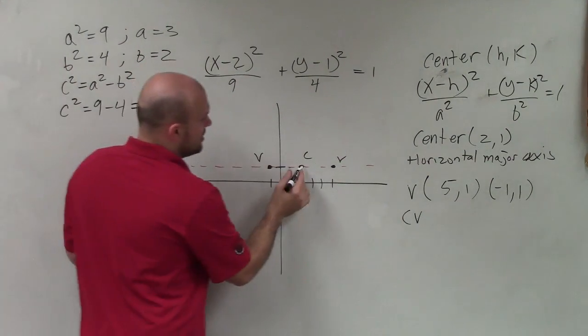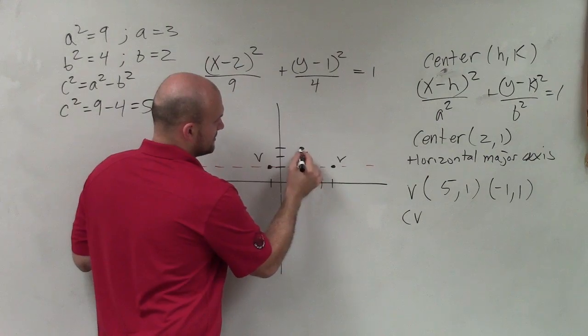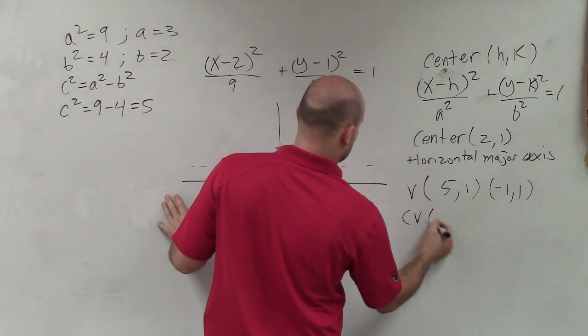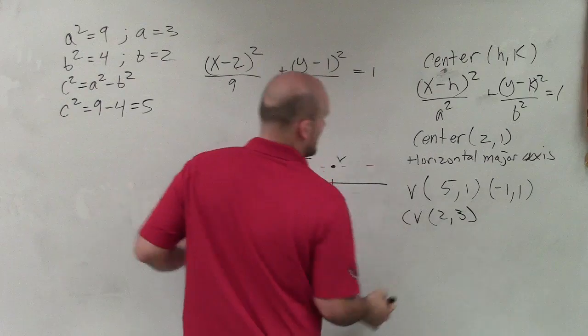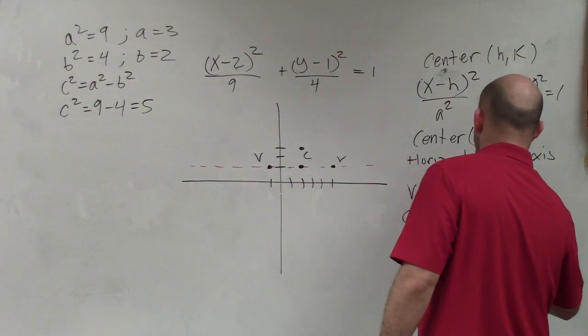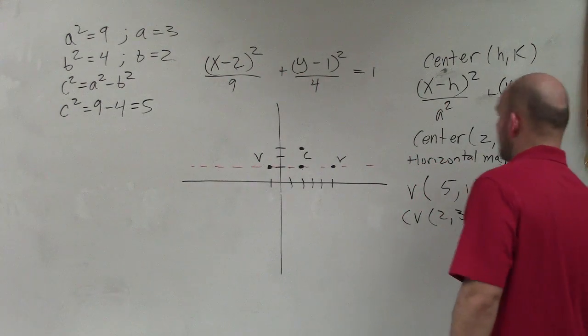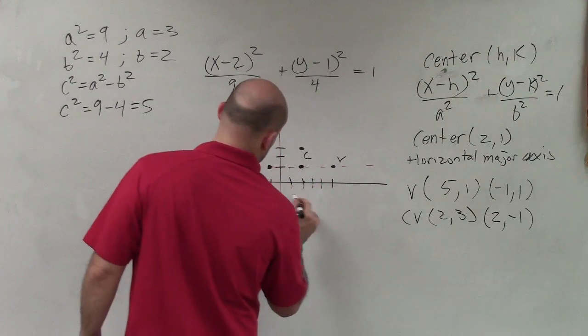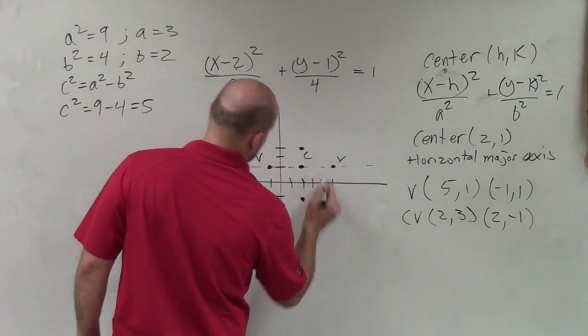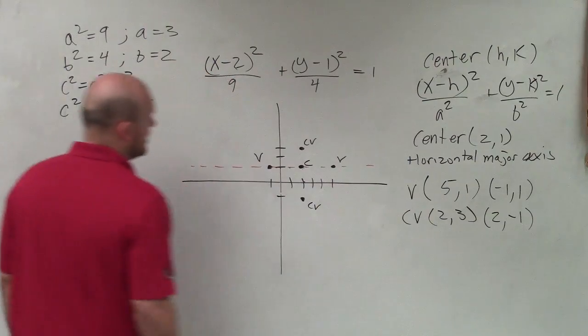Take the square root of both sides. So I'm just going to go up 2. So I can say co-vertex is at (2,3) as well as (2,-1). So that's co-vertex, that's my co-vertex.